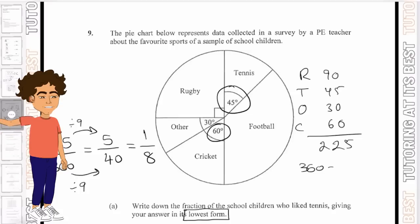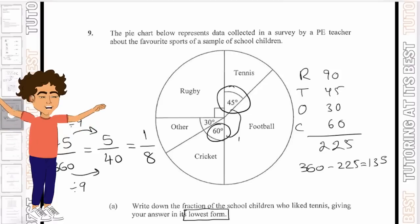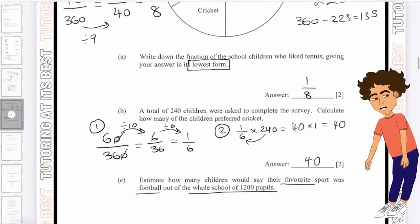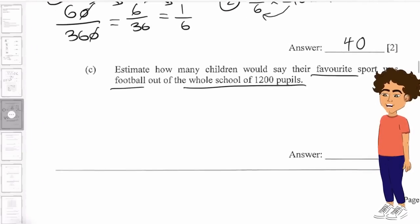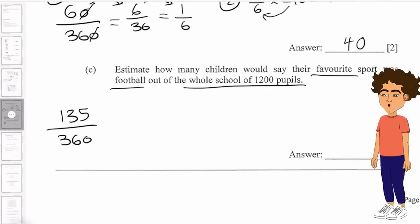If we go ahead and add that all up, that gives us 225. And if we subtract that from 360, that gives us 135. So now we know that football is 135 degrees. So all in all, we have 135 over 360 degrees.